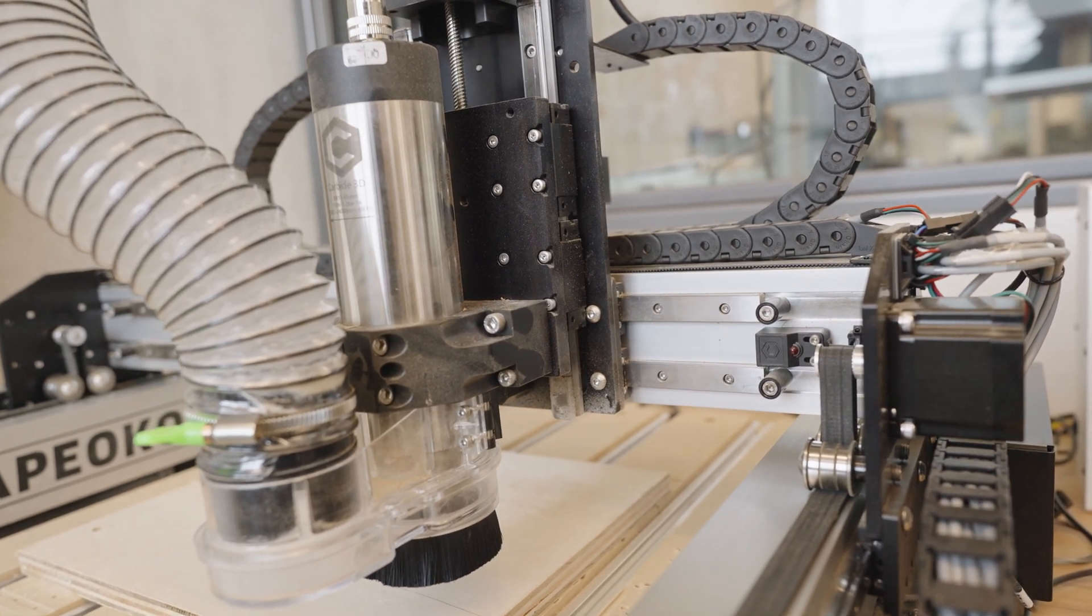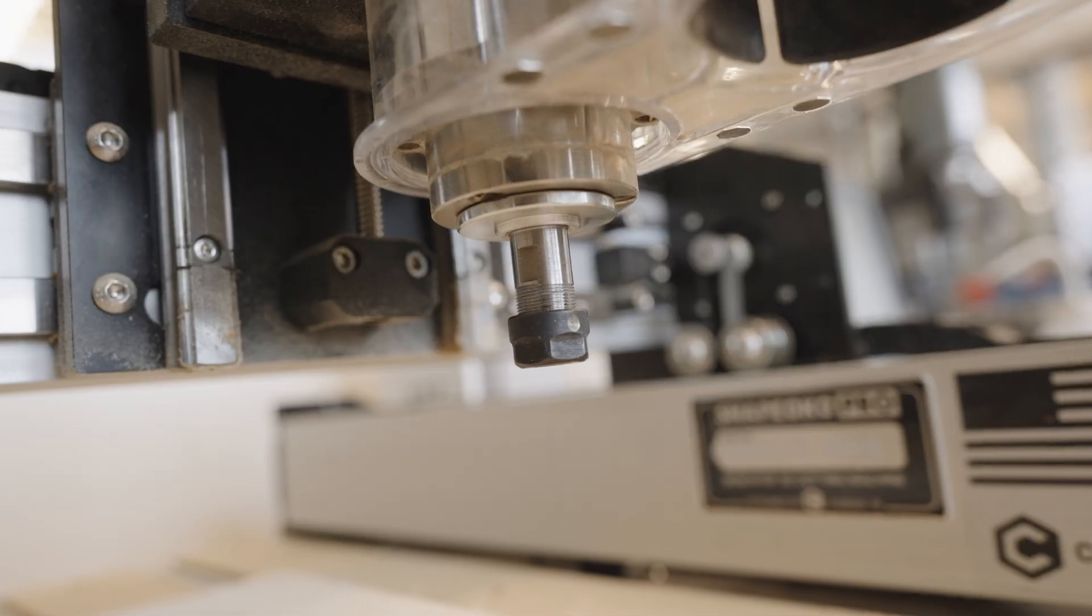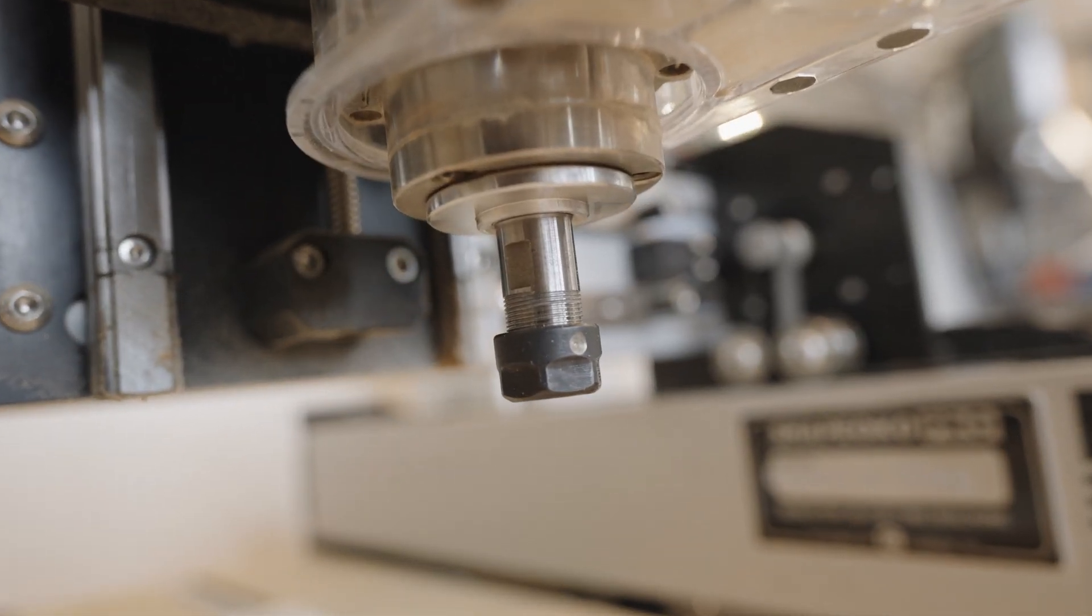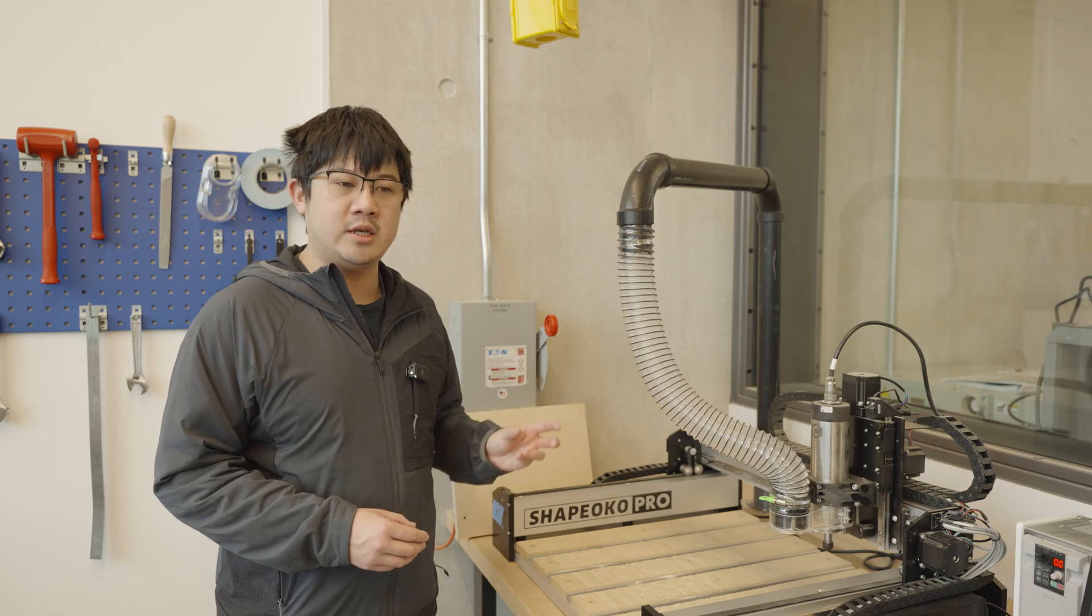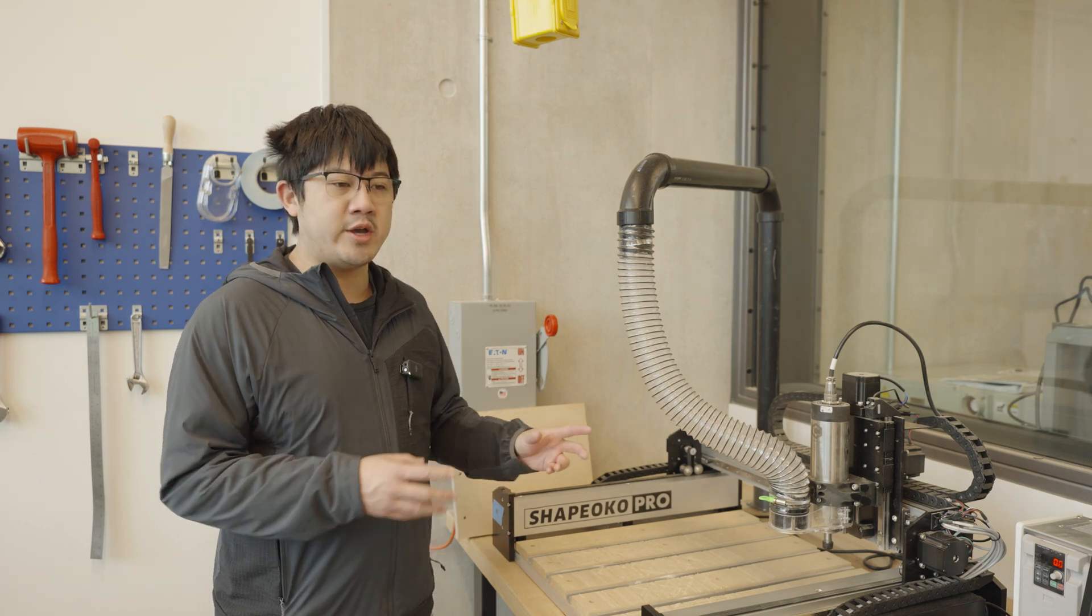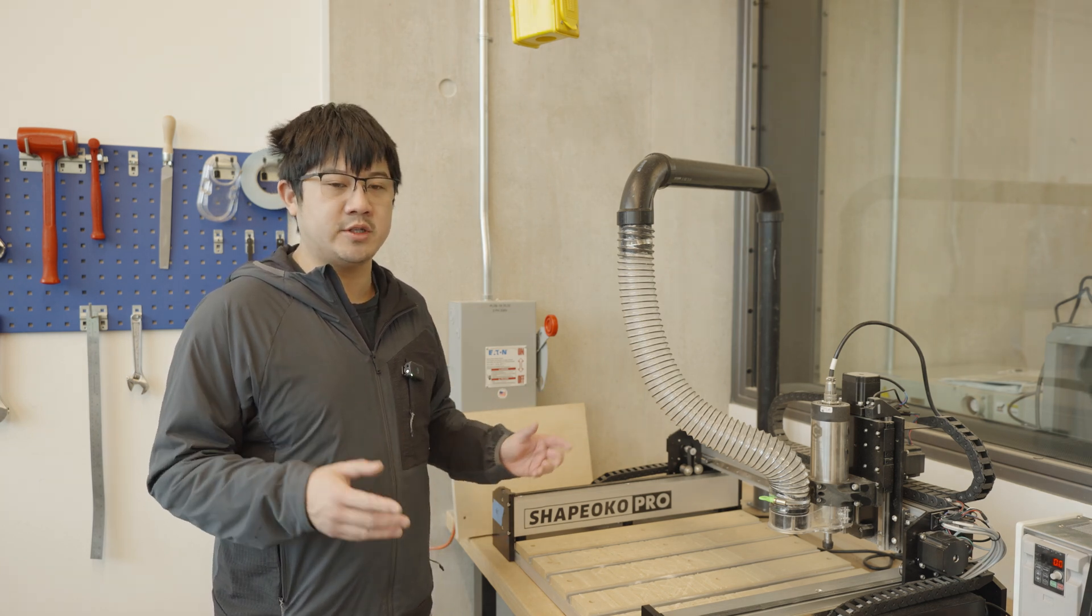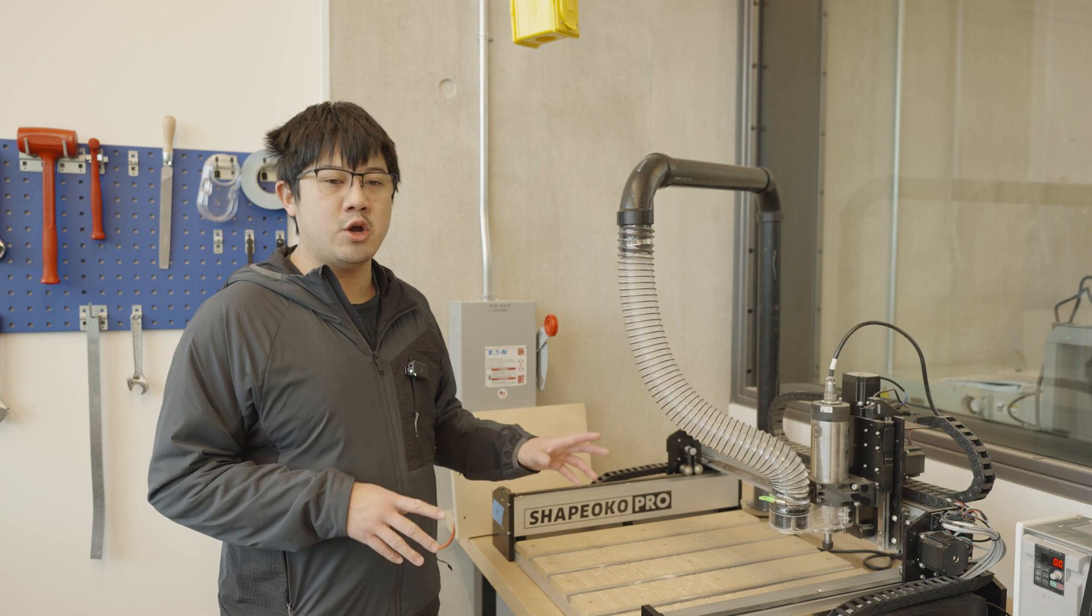Now, the spindle itself contains a motor that's going to spin our rotating tool, and the very bottom of the spindle has something called an ER collet, and this is a clamping system that then holds on to our tools. We're going to show you how to use the collet system to hold on to various size tools later in the video, but I just want you to know what that is.